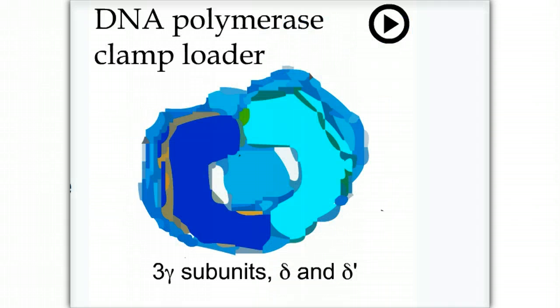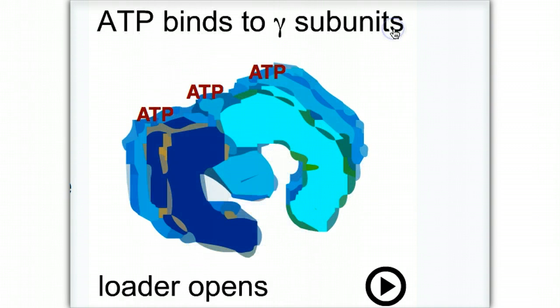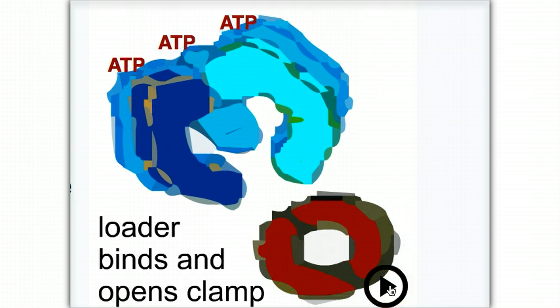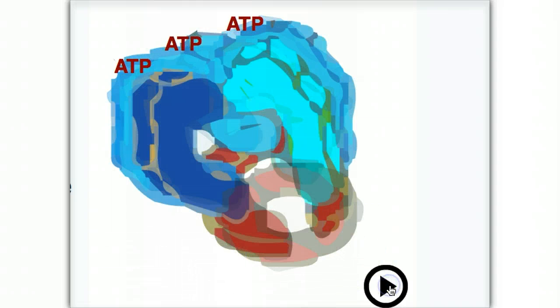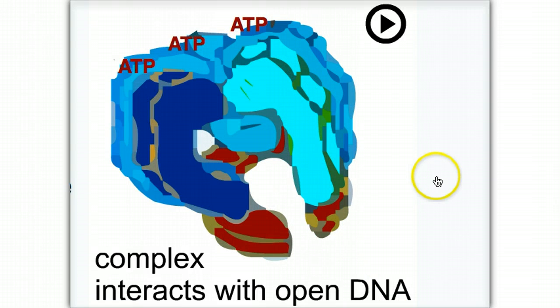When the clamp loader binds ATP, it can bind the clamp protein, and this interaction leads to the opening of the clamp.